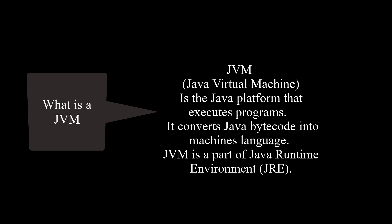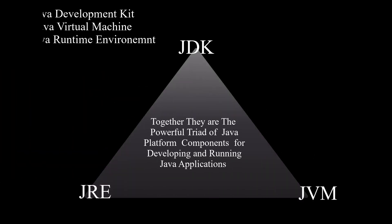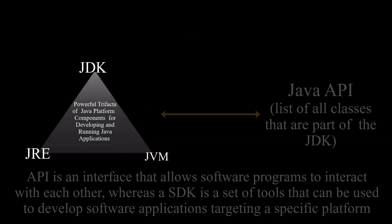Notice it's byte code and not binary code. So together, the Java Development Kit, Java Virtual Machine, and Java Runtime Environment are the powerful trio of Java platform components for developing and running a Java application.